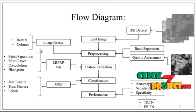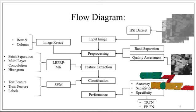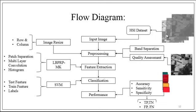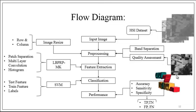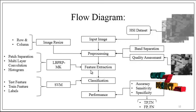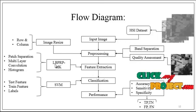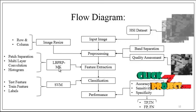After getting the image resized, quality assessment is performed to detect better quality images. The hyperspectral image has N number of frames, and among those we consider only the quality frames. After extracting the quality bands, we move on to feature extraction. In feature extraction, the LBP-RPN-K algorithm is used to extract features from each band.